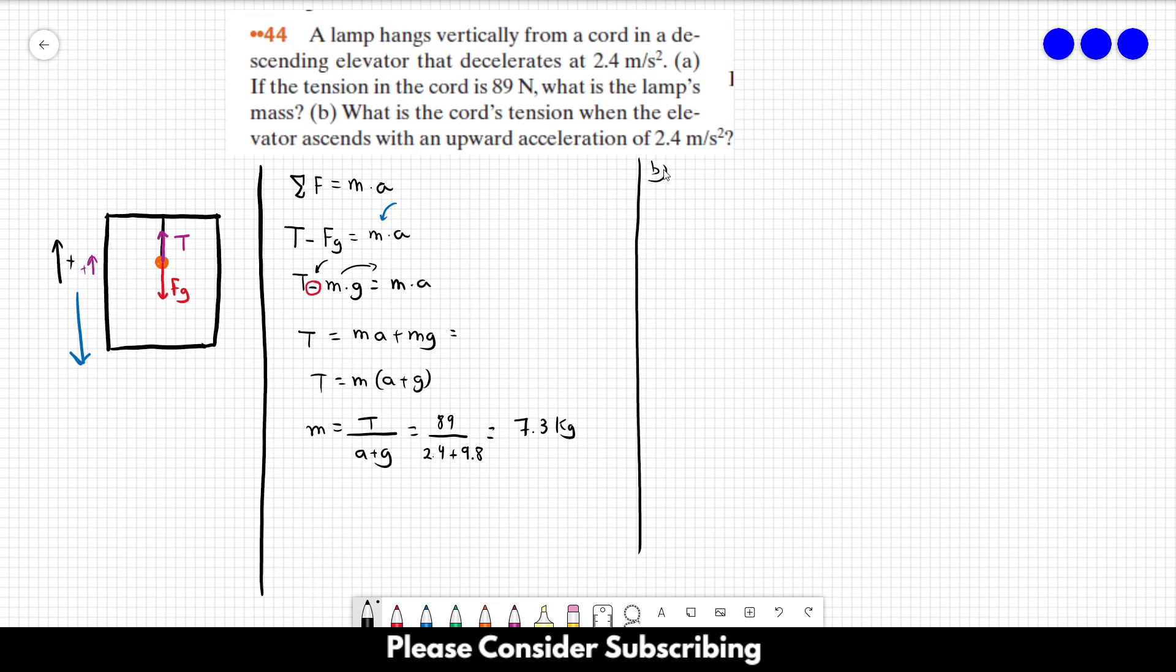For letter B. So, we want the tension in the chord when the elevator extends with an upward acceleration of 2.4 meters per square second. So, again, the acceleration is upwards and the acceleration is the same. The only difference is that the elevator is going upwards, but the acceleration is the same.